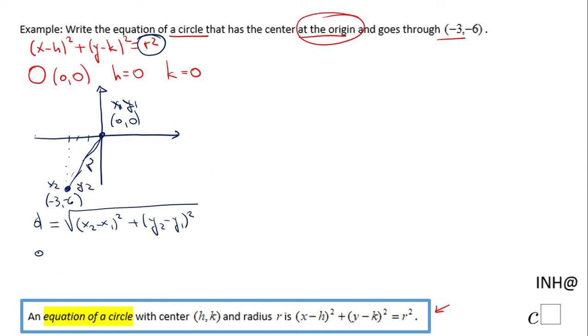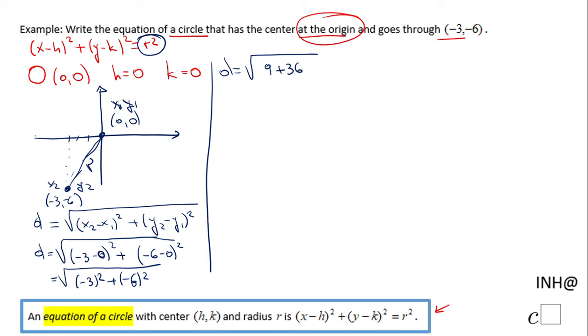So this distance formula becomes square root of negative 3 minus 0 squared plus y2 minus y1, and that will be negative 6 minus 0 squared. So then we have here negative 3 squared, because negative 3 minus 0 is negative 3, plus negative 6 squared. So we can keep simplifying, and we have negative 3 squared that is 9, negative 6 squared that will be 36, and if we add these two we get 45.